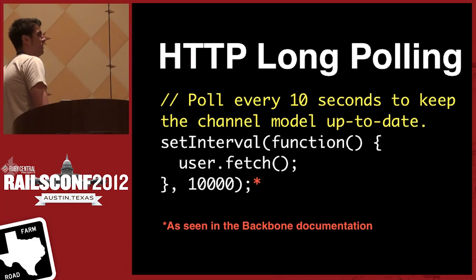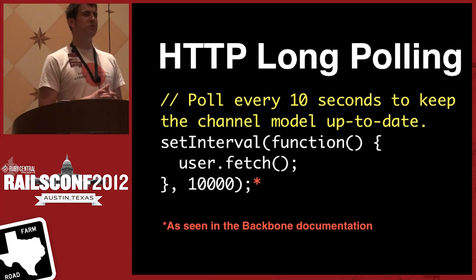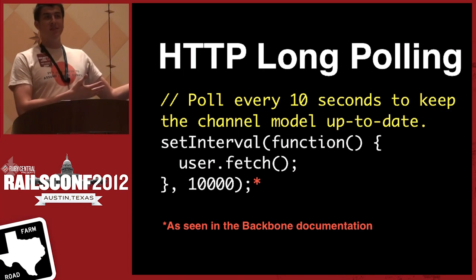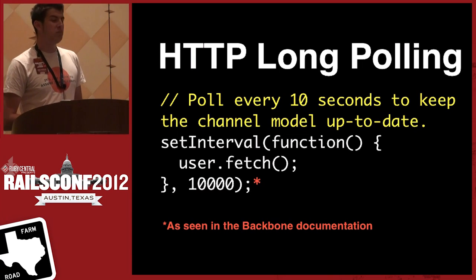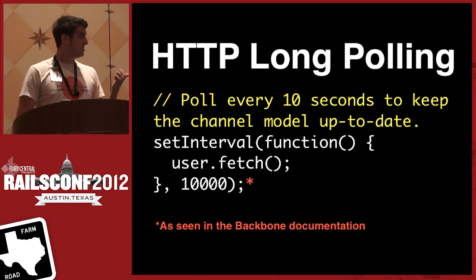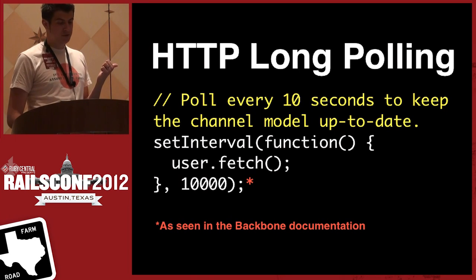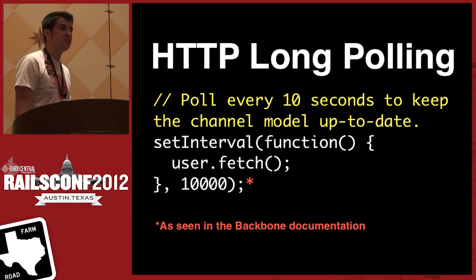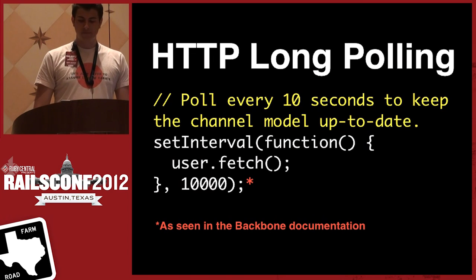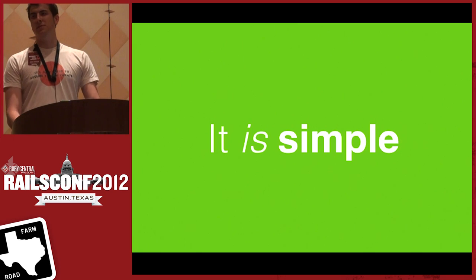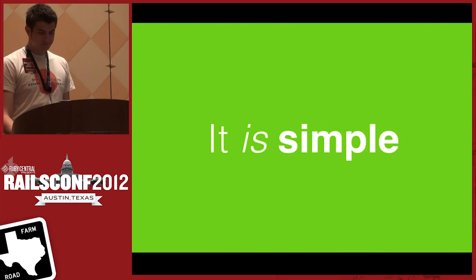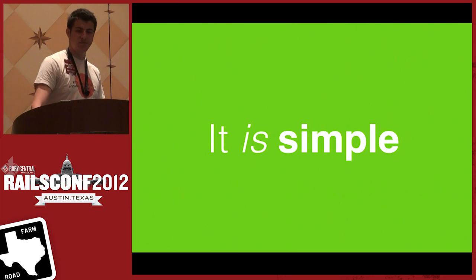This is actually in the Backbone documentation today, and this is probably the first thing you'll do to make your application feel real-time. This is the exact approach that we took, and we still have a lot of long polling in our application. In this particular case, we have all the user data, and we say every 10 seconds, let's refresh that user data from the server. What's nice about that approach is that it's really, really simple — assuming that these 10-second lags are okay. But you start to run into problems as you scale that.